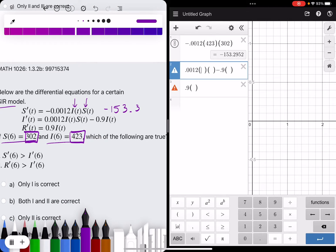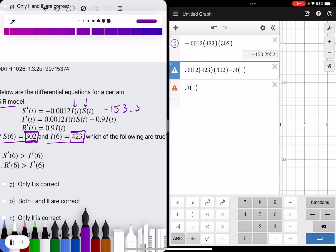And then I prime I have set up here, again I times S, so 423, and then 302, and then minus 0.9 times I, which again is 423. So then for I prime we have negative 227.